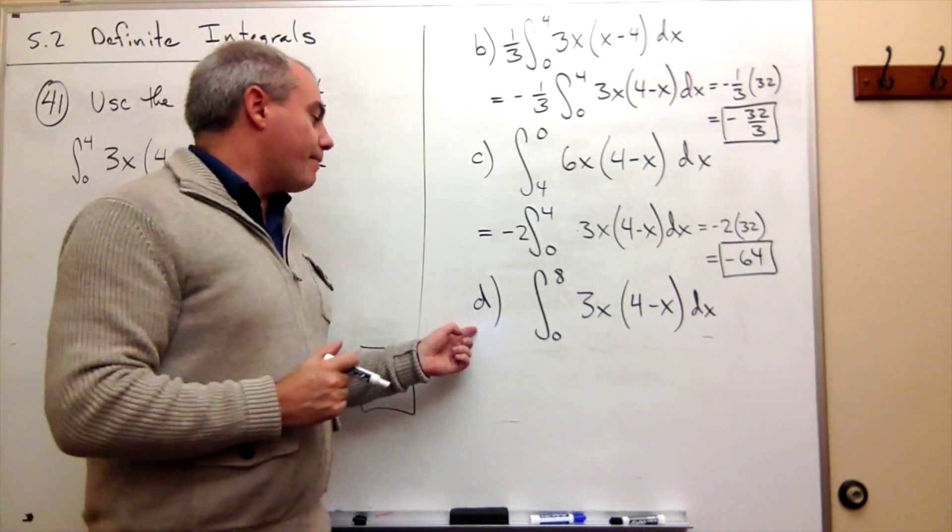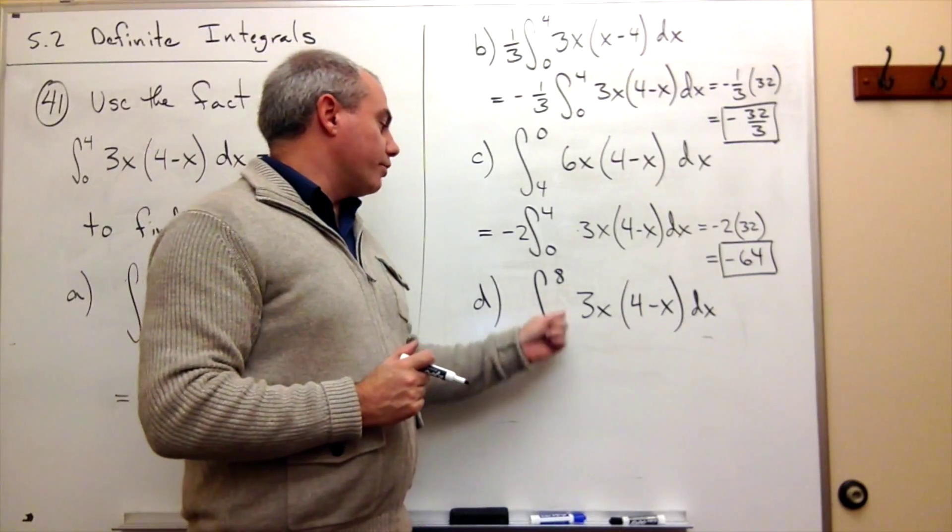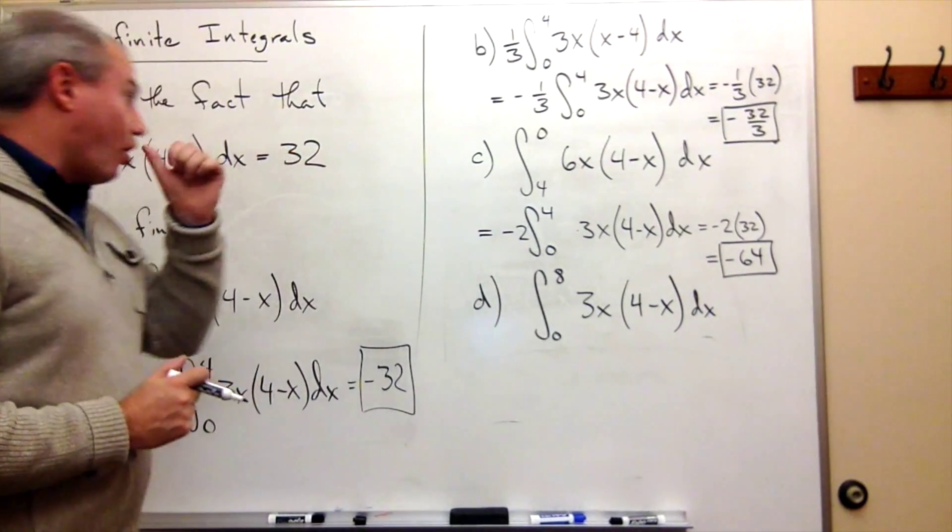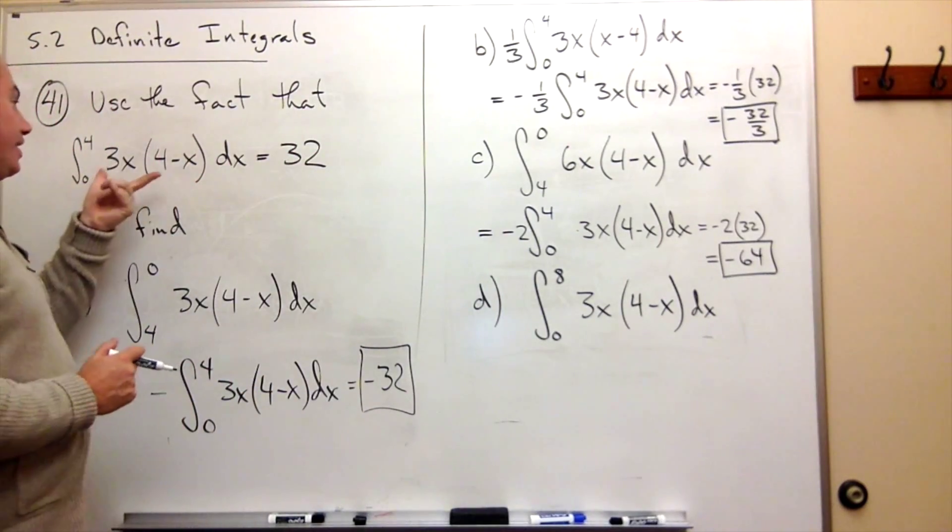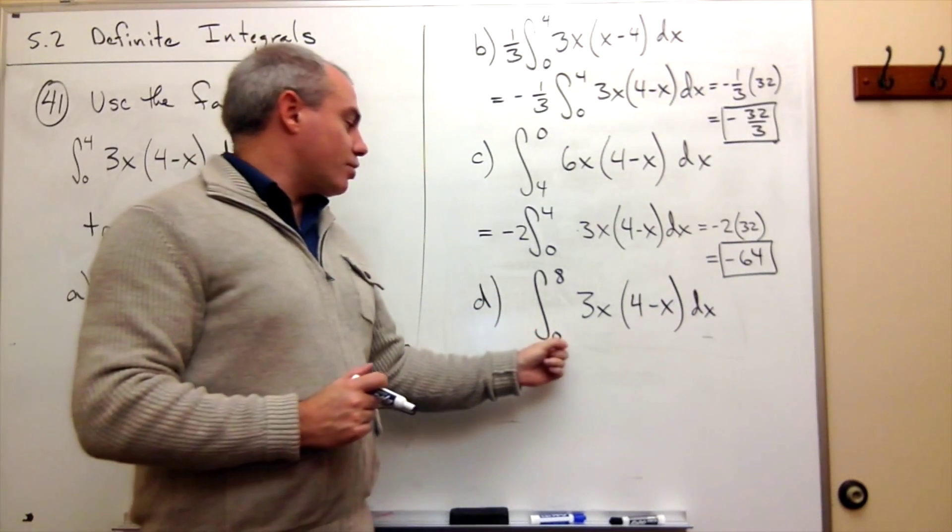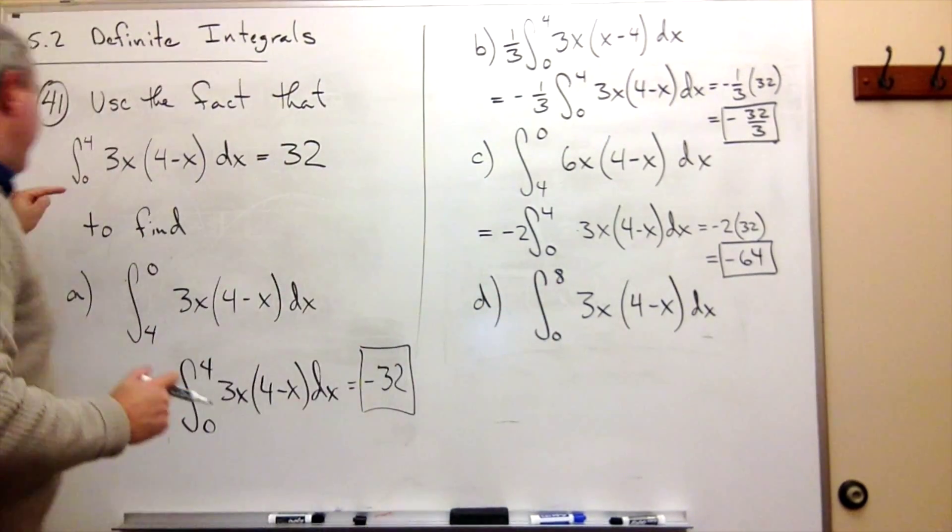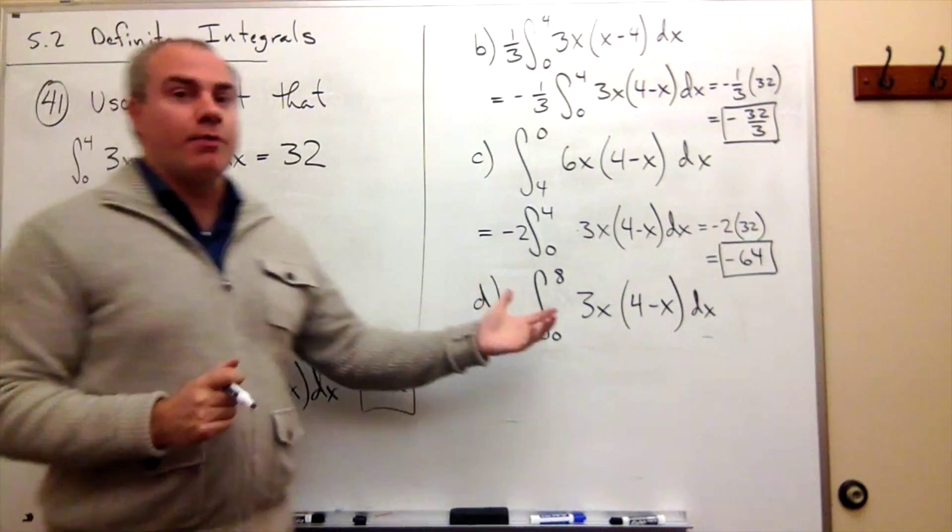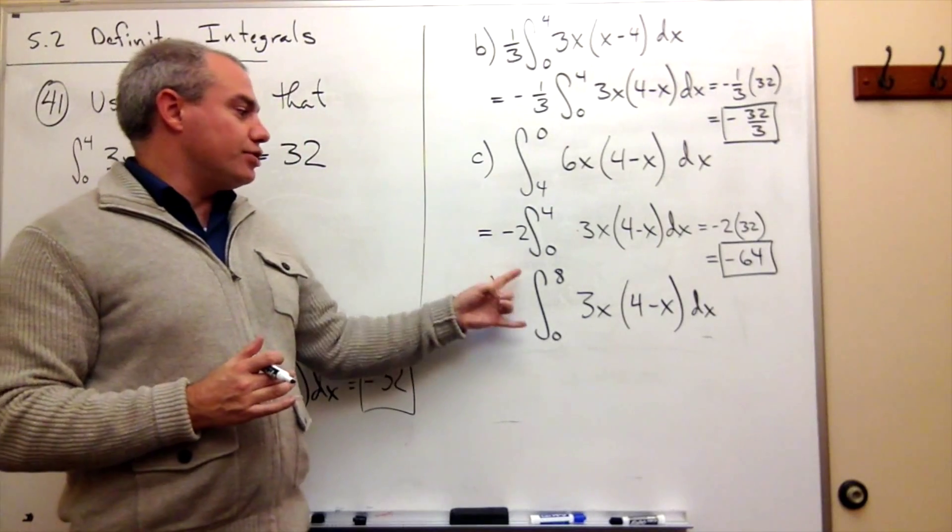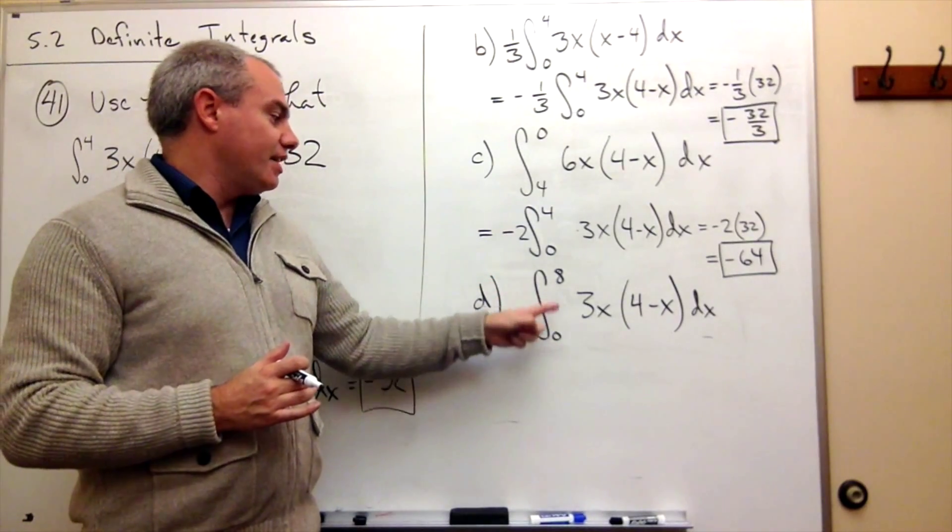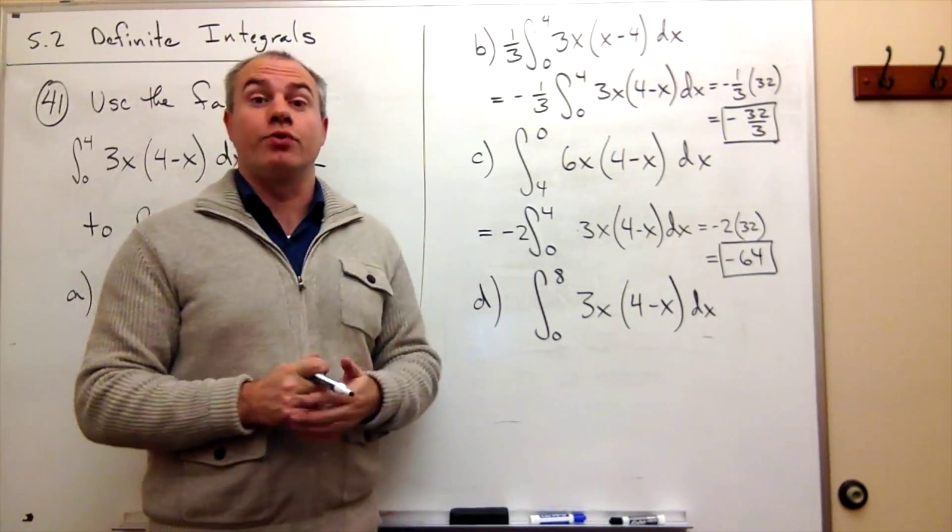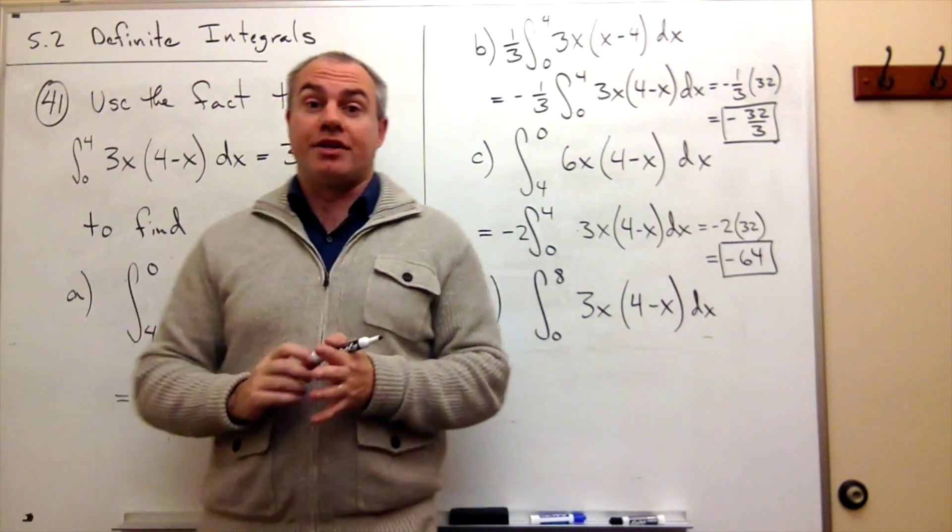In part d, I'm asked to compute the integral from 0 to 8 of 3x times 4 minus x dx. Now, and all I really have to work with is this integral. Well, I can't do anything with this, because this is going from 0 to 8. And going from 0 to 4 really doesn't tell me anything about the function beyond 4. So I can't really do anything with this because it's going from 0 to 8. So there's nothing that can be done with the tools that we get to work with on this problem.